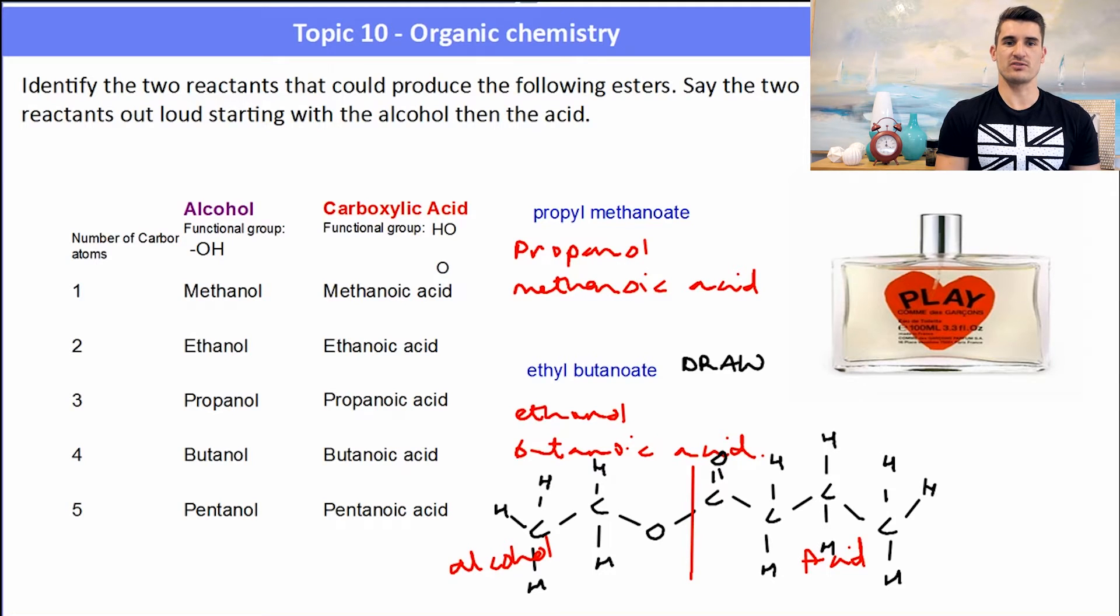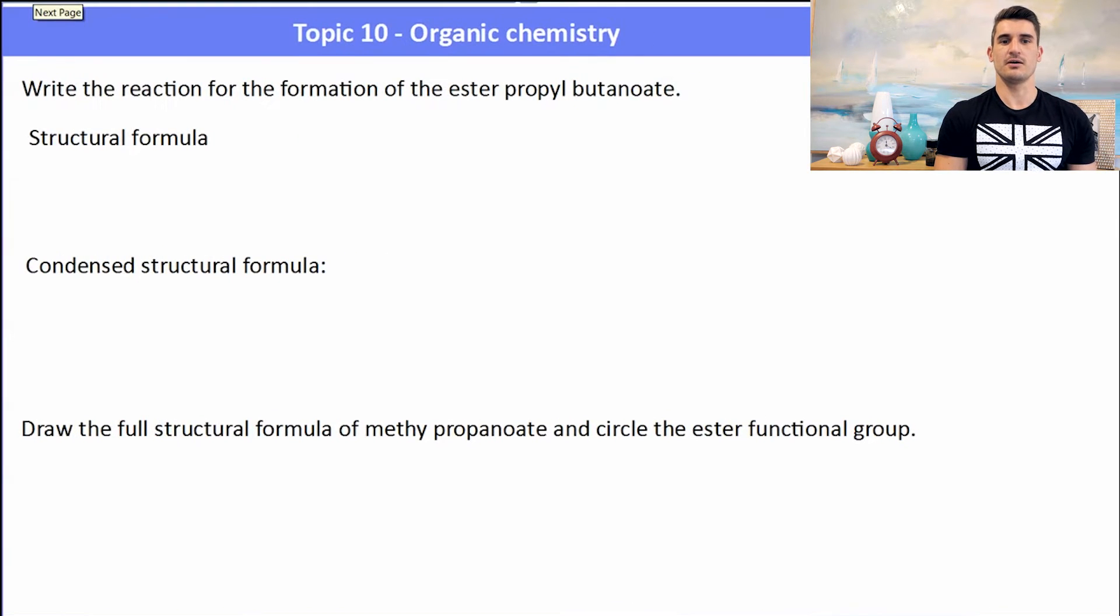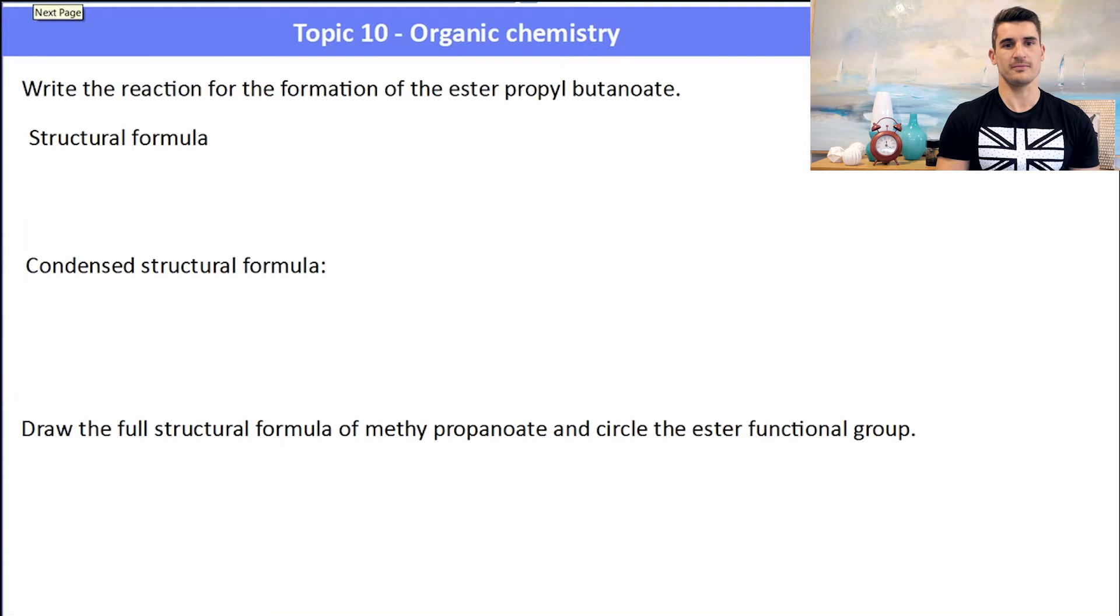Okay, so an example. Write the reaction for the formation of the ester propyl butanoate. So the first thing we want to do is try and draw out the ester with the full structural formula. So what will this look like? We start off with the alcohol. Propanol would have three carbons, so we have here our propanol with our OH at the end. Our butanoic acid—well, I'm going to flip that around and draw it in reverse just so we can see where the reaction occurs. We have our carboxy functional group and then we have three other carbons all with the hydrogens.